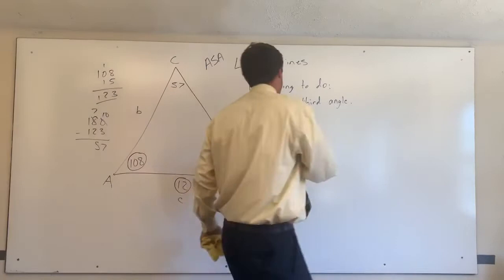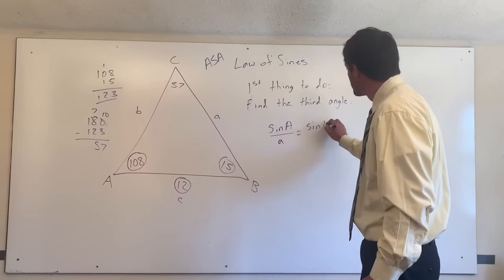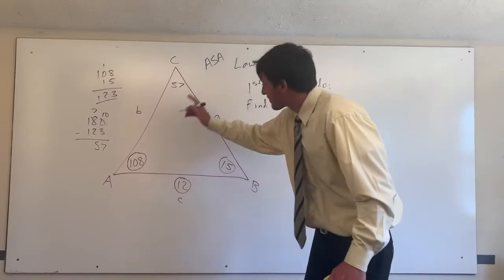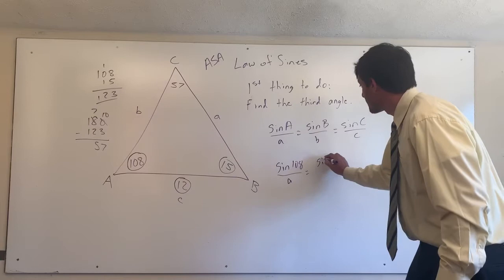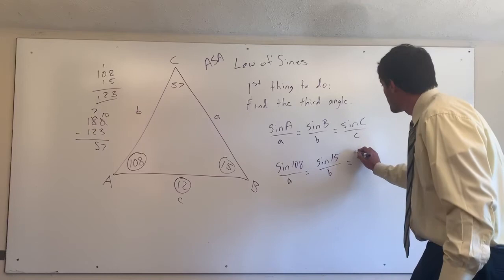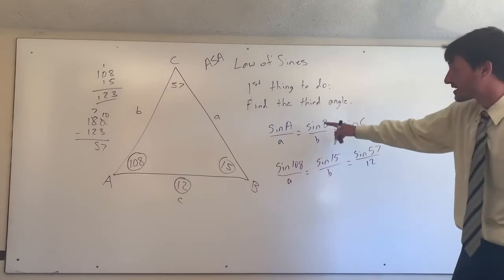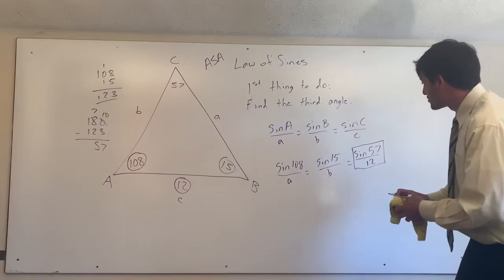Now, let's set up the law of sines. We know that the sine of A divided by a is equal to the sine of B divided by b is equal to the sine of C divided by c. And let's put the information in. We know the sine of 108 divided by a, and I'm assuming you guys are very good with this at this point, because you've watched the other video. Sine of 15 divided by b is equal to the sine of 57 divided by 12. You guys can pause and look to make sure everything matches, and again, you have to use the piece of information where everything is known. So you're going to have to use the sine of 57 over 12 to solve this.